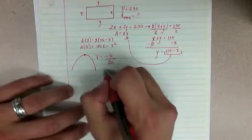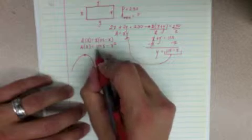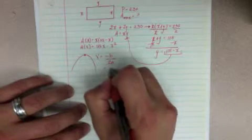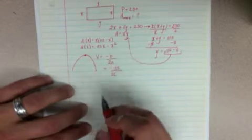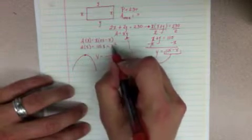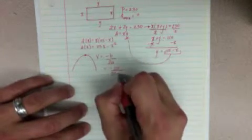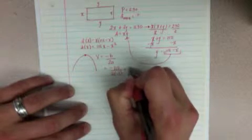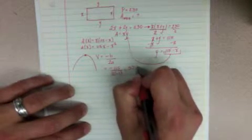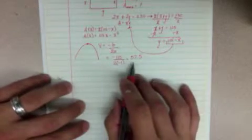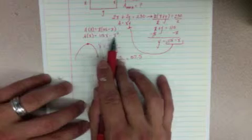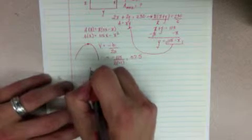In this case, negative B is the second term, which is 115, and the A is the first term, which is our X squared, which would be negative 1. And when you simplify this out, you should get 57.5. Now, that's not your answer. You have to go ahead and plug that back into your function to figure out a value.